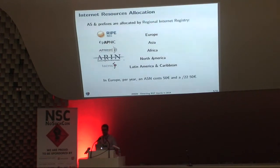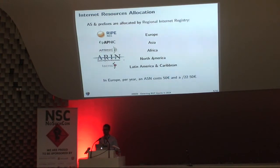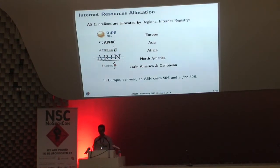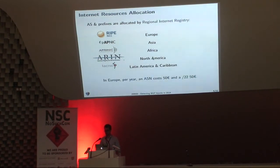If you want to start your own operator, you will need internet resources — Autonomous System numbers and IP prefixes. These are allocated by organizations called Regional Internet Registries. If you are in Europe, you can go to RIPE, based in Amsterdam. If you are in Asia, you can go to APNIC and ask for these internet resources. In Europe, per year, it could cost 50 euros for an Autonomous System number and the same price for a /22 prefix — that's a bit more than 1,000 IP addresses.